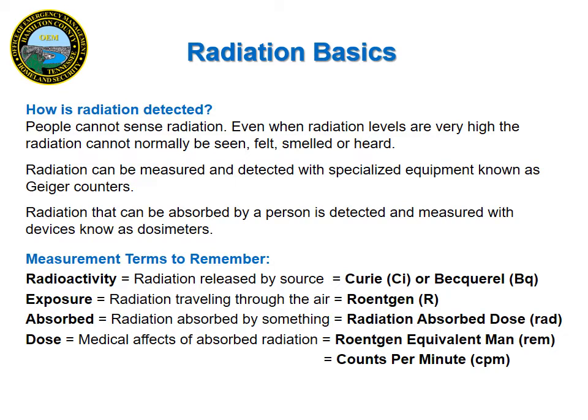So how is radiation detected? Radiation is difficult to detect because we cannot see, smell, hear, or feel radiation. We have to utilize special equipment in order to detect radiation. This equipment includes Geiger counters and dosimeters. When discussing radiation, there are several measurement terms that you will need to know: radioactivity, exposure, absorbed, and dose. Each measures something different and has its own measuring unit.